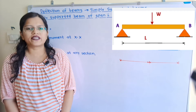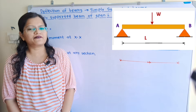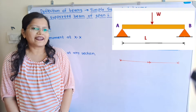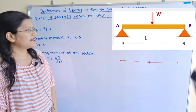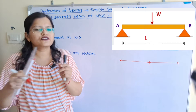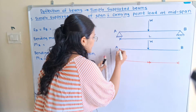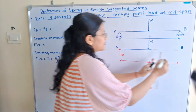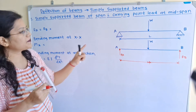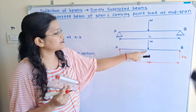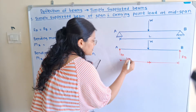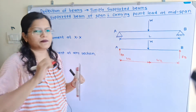In this video, we are going to find out the slope equation and deflection equation for a simply supported beam carrying load W at its mid span. Observing the diagram, supports are given at ends A and B. The total length is L and the weight W is at its mid span, so the distance from end A is L/2 and the other half is also L/2.